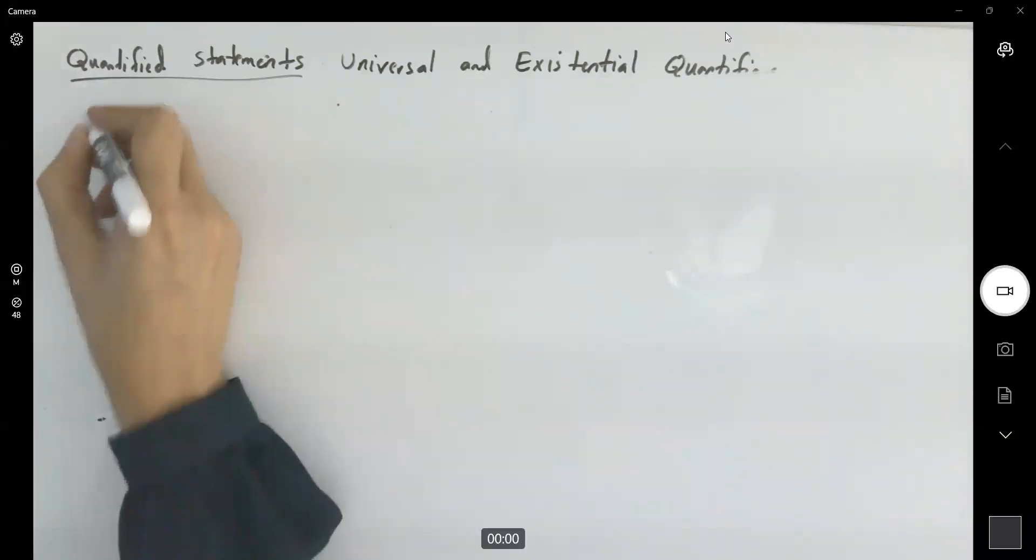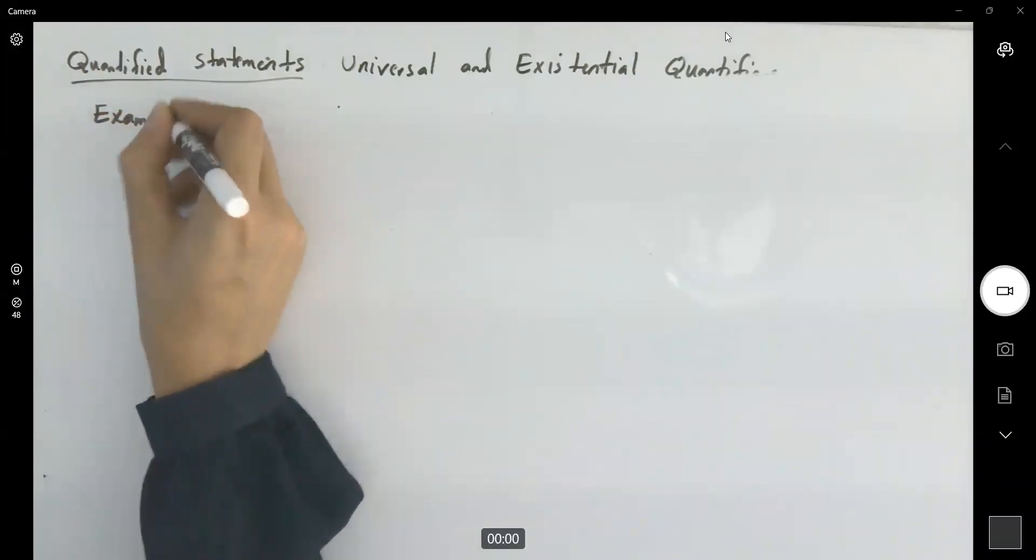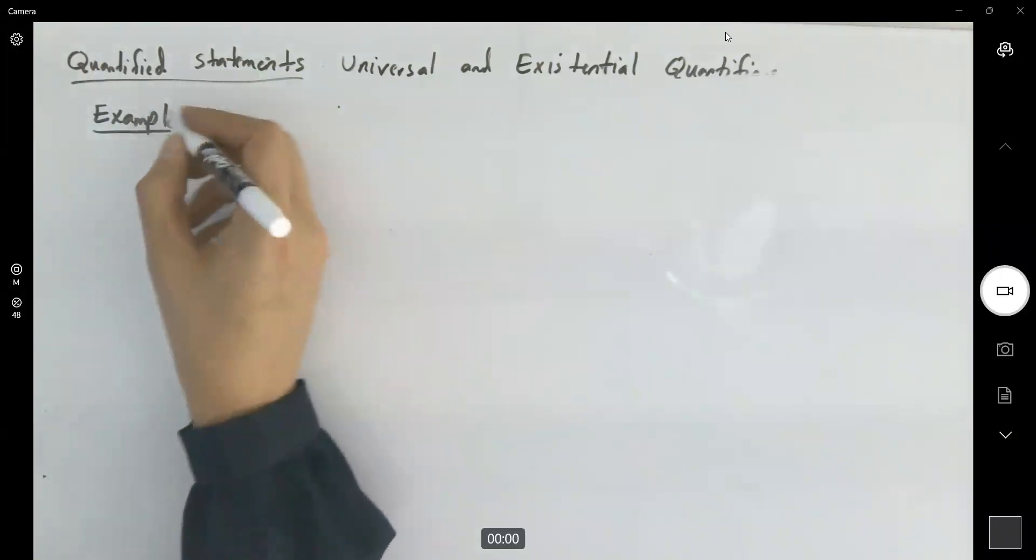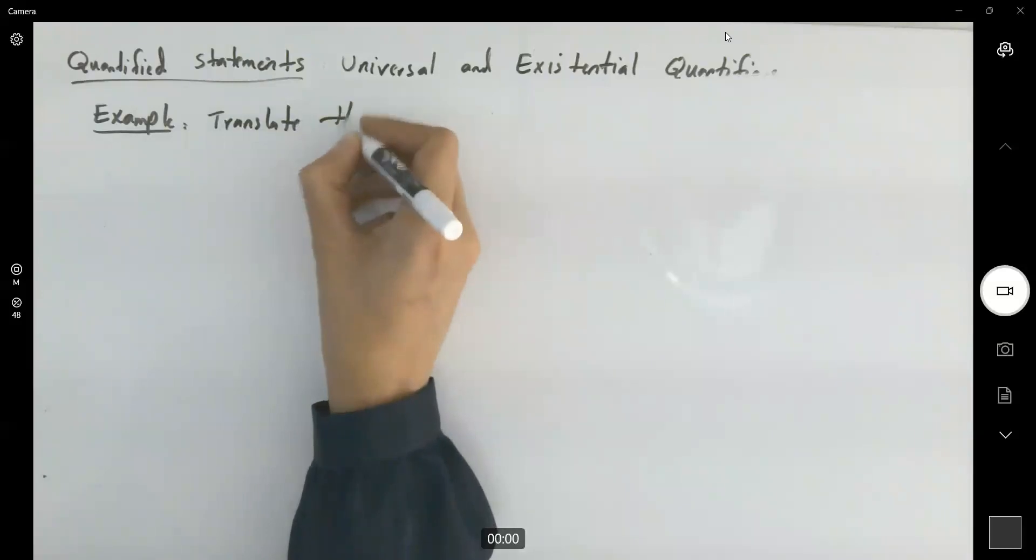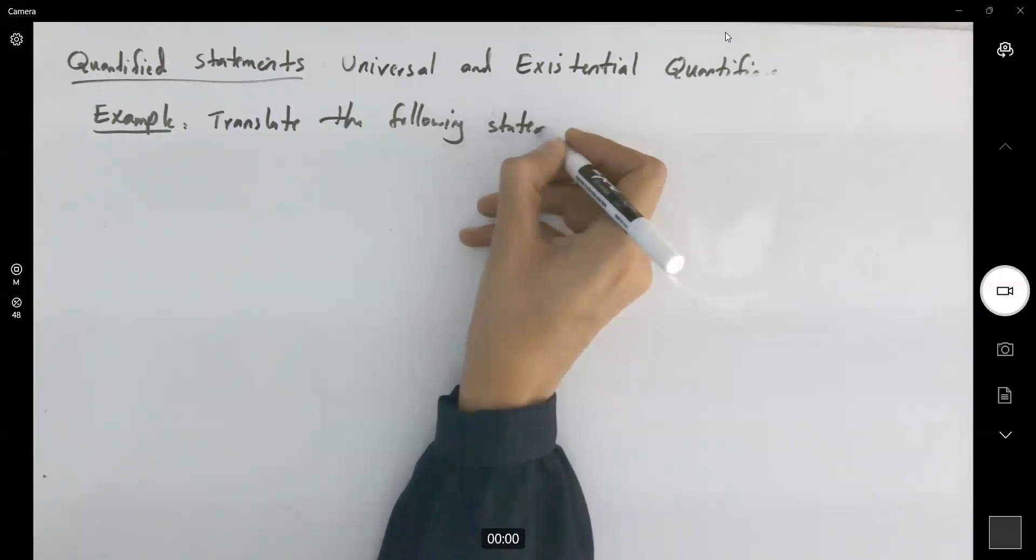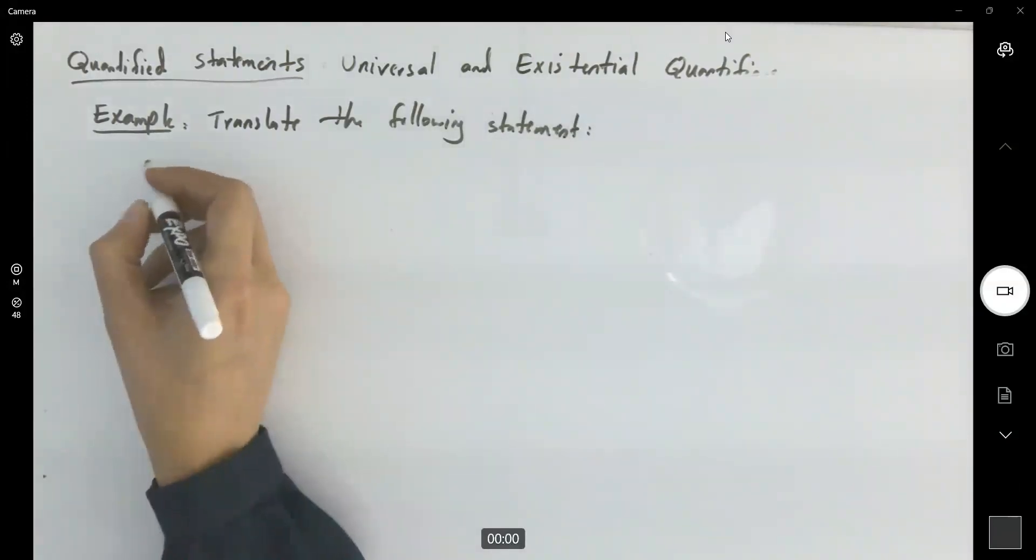For example, just going to go over one example talking about multiple quantifiers. Suppose I ask you to translate the following statement: every non-zero real number has a reciprocal.